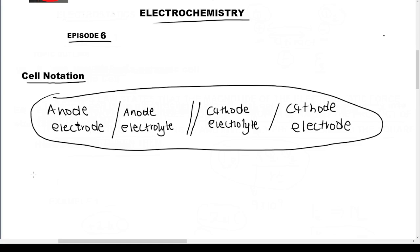This is how you write down the cell notation. The anode electrode in this case is zinc. Then slash, then the electrolyte — the anode electrolyte is zinc sulfate, but we leave out the sulfate part because it's a spectator ion, so we just write Zn²⁺, and then the salt bridge — double slash.